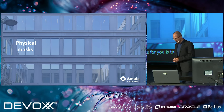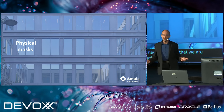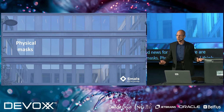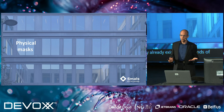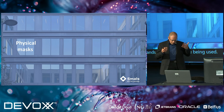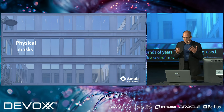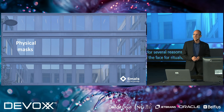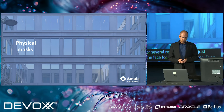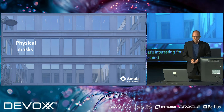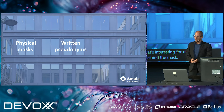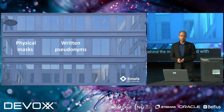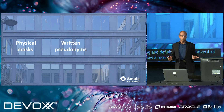Physical masks are intriguing objects. They already exist for thousands of years. They have been used for several reasons, such as physical protection of the face, for rituals, for theater, even torture. But also, and that's interesting for us, to hide the identity of the person behind the mask. Later, with the advent of writing, and definitely with the advent of the printing press, we saw a written version of the mask — the pseudonym.